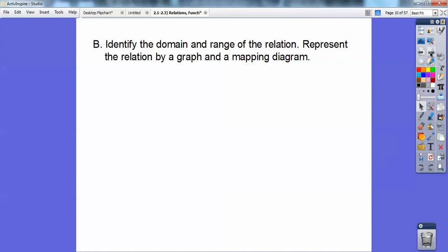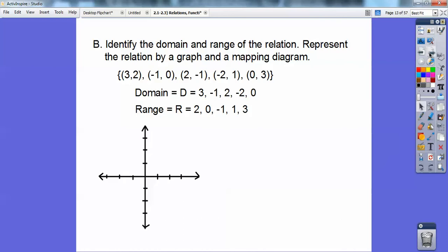So here, identify the domain and range of this relation and represent the relation by graphing. Well, we know how to do that in a mapping diagram. The domain is all the x's, 3, negative 1, 2, negative 2, 0. The range is all the y's, so there's your domain and range. There's all those points graphed right there. Can you just glance? Does it pass the vertical line test? It does to me, so that would be a function right there.